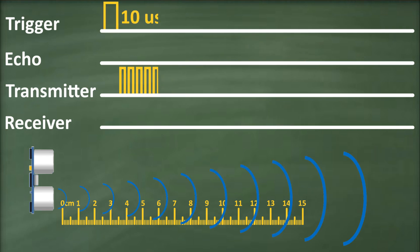If the transmitted pulses are not reflected back, the echo signal times out and goes low after 38 milliseconds, indicating no obstruction within the sensor's range.